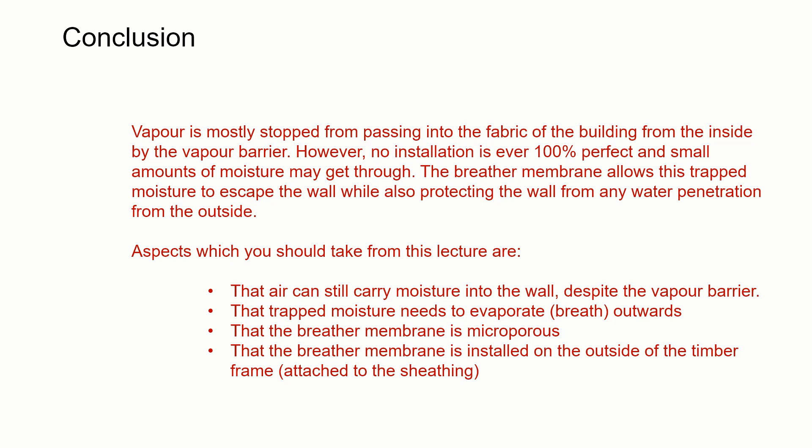So, in conclusion, vapour is mostly stopped from passing into the fabric of the building from the inside by the vapour barrier. But we can't be sure that it's going to be 100% perfect the whole time, and we're always going to get gaps where things are cut through it or where there are imperfect seals. The breather membrane allows any moisture trapped in the wall to escape out of the wall, while at the same time protecting the wall from any new water penetrating from the outside. Key aspects from this lecture: air can still carry moisture into the wall despite the vapour barrier; trapped moisture needs to evaporate to breathe outwards; the breather membrane is microporous, allowing vapour to pass through while protecting from new moisture; and it is installed to the outside of the timber frame attached to the sheathing.